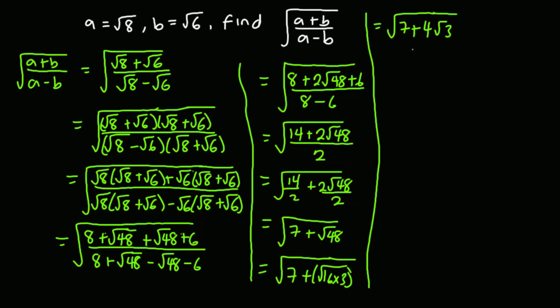We are supposed to leave this in its simplest form, meaning we have to find a way of eliminating the overall square root. Generally if you have something of this form, the end result will always be in the form √a + √b. So we are going to express this whole thing to look like √a + √b, then we'll remove the overall square root by squaring both sides.